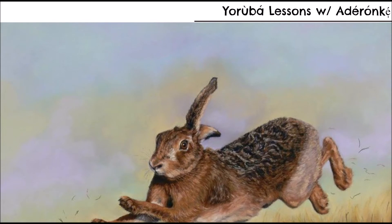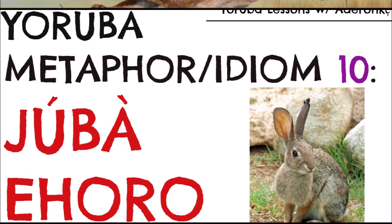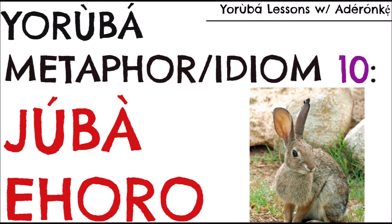Hey guys, it's Aderonke again. Today I'd like to continue on my series on Yoruba metaphors and idioms. The title of this one — which is pretty much the idiom itself — is hard to categorize because idioms and metaphors tend to be quite similar, especially in usage. The idiom slash metaphor is: Júbà Ehoro.